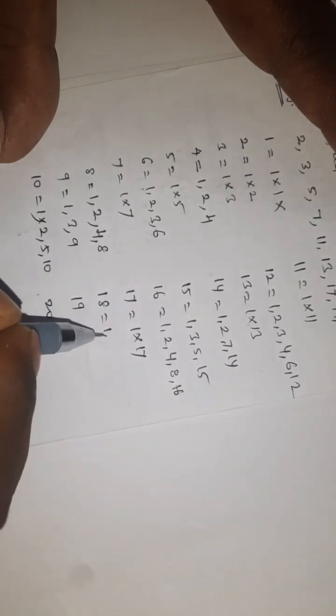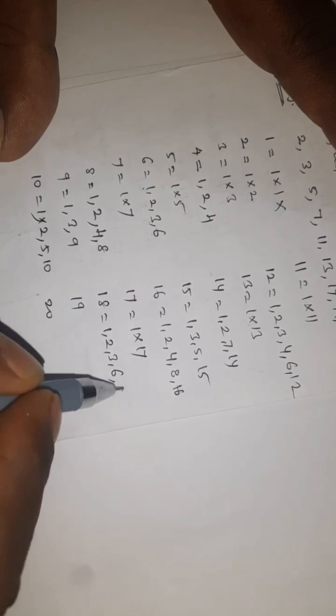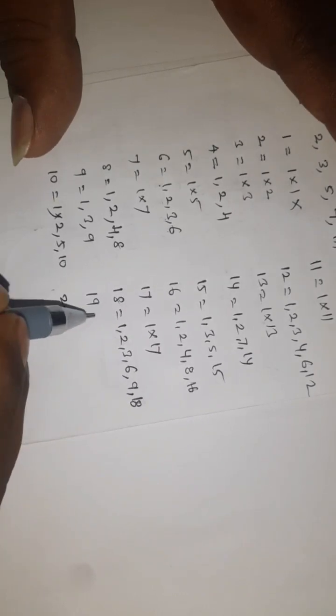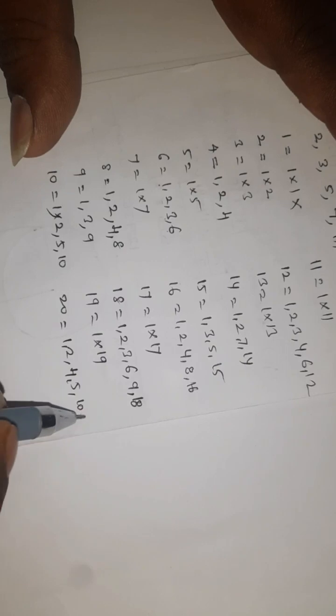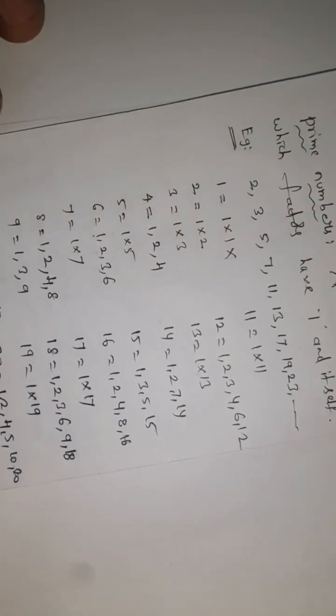Seventeenth: 1 times 17. Eighteenth: 1 table, 2 table, 3 table, 6 table, 9 table, 18 table. Nineteenth: 1 times 19. Twentieth: 1 table, 2 table, 4 table, 5 table, 10 table, 20 table. Now from 1 to 20, we can identify.